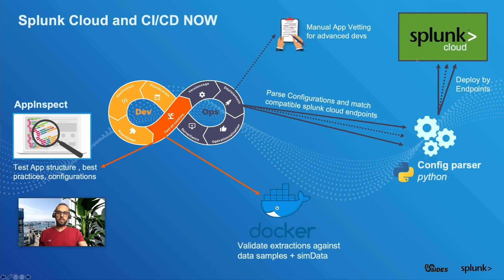The only requirement is to have the application already created in Splunk Cloud, as it is not yet possible to create a new application using the REST API. If the application is empty or the configuration stanza is new, the script will create it in Splunk Cloud; otherwise, the script will update the configuration with the new attributes found in the new version. Once the job finishes successfully, you will find that a new version of your application has been deployed.